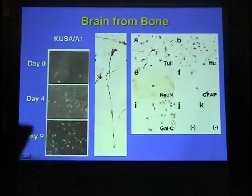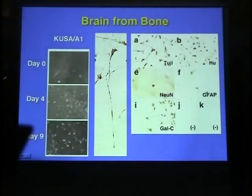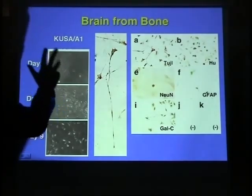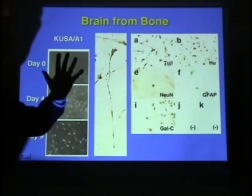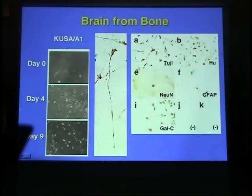Bone marrow stroma cells are able to differentiate into osteogenic, chondrogenic, adipogenic, cardiomyogenic, and myogenic lineages — all limited to mesoderm-derived origin. One day, a graduate student told me that a certain type of marrow stroma cells started to form axon-like long processes through the use of demyelinating agents.